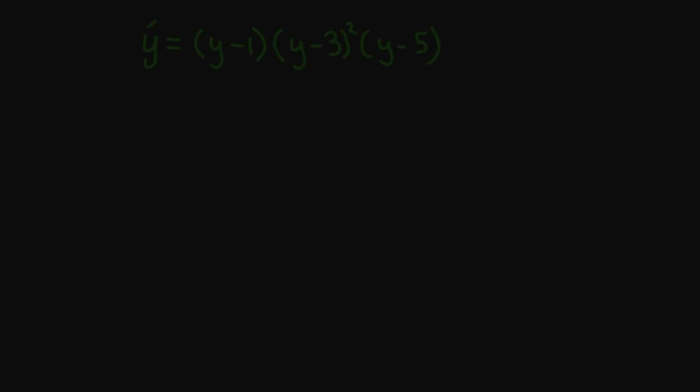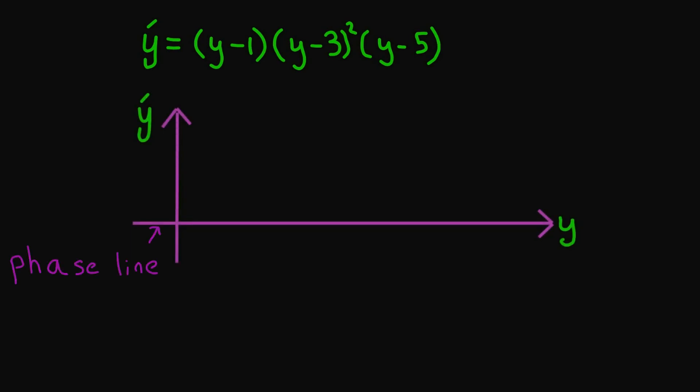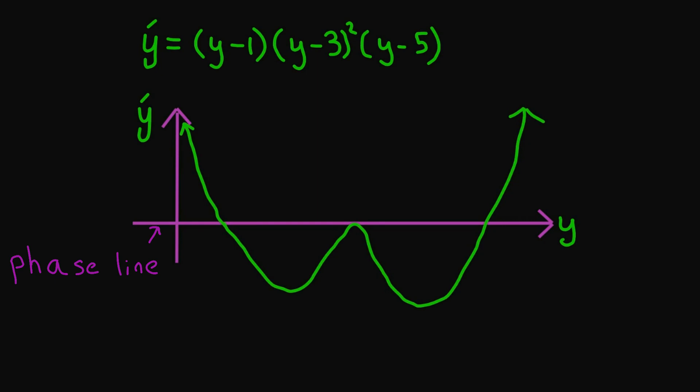Now we consider an autonomous first order differential equation: y prime is equal to (y minus 1)(y minus 3) squared times (y minus 5). I've written y and y prime instead of y of t and y prime of t for aesthetic purposes. We are going to do something interesting — I'm going to graph y prime as a function of y. This graph looks something like this.